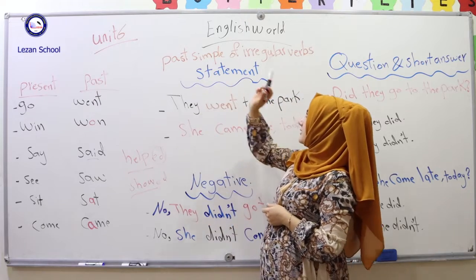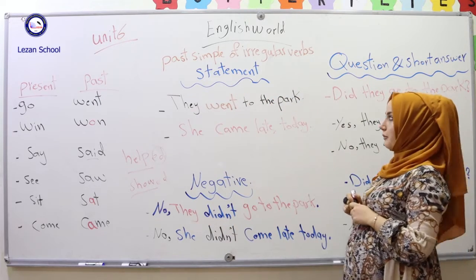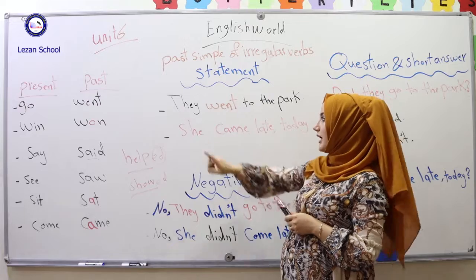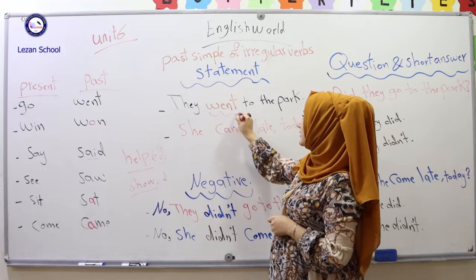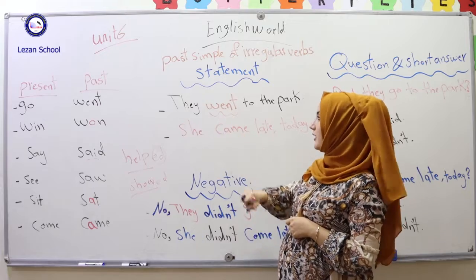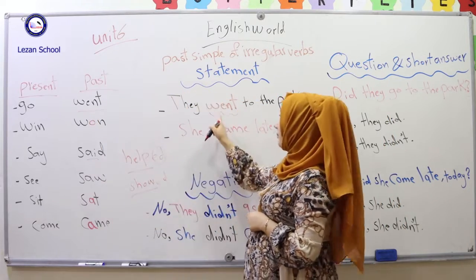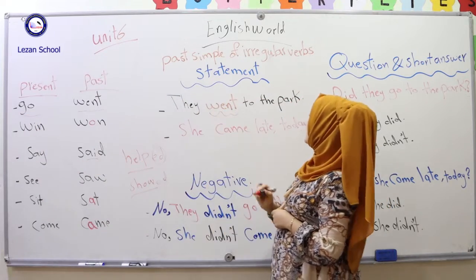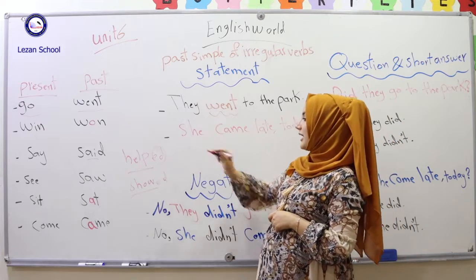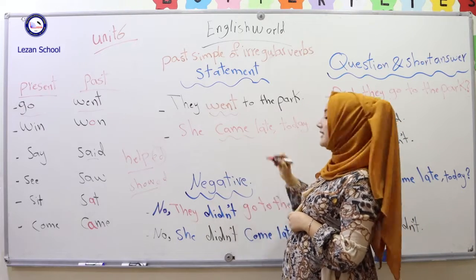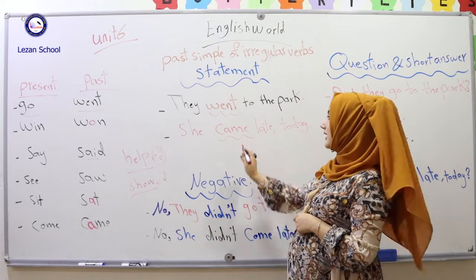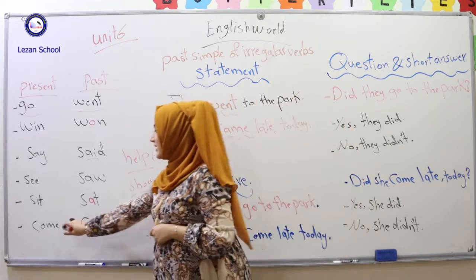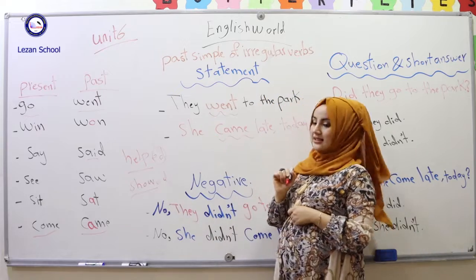We have the statement form, question, and short answer form. In the statement form, for example: 'They went to the park.' Here 'they' is our subject, and 'went' is the past verb — the present form is 'go.' Another sentence: 'She came late today.' 'Came' is past, and its present form is 'come.'